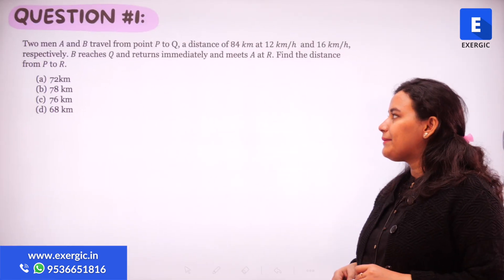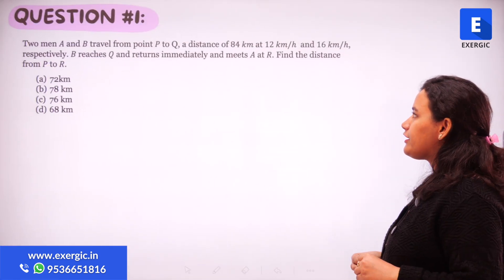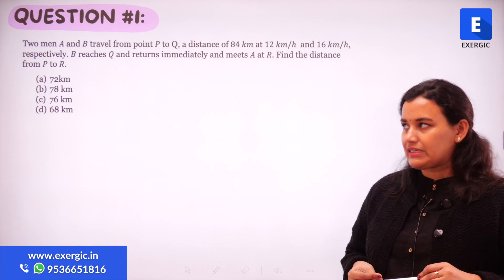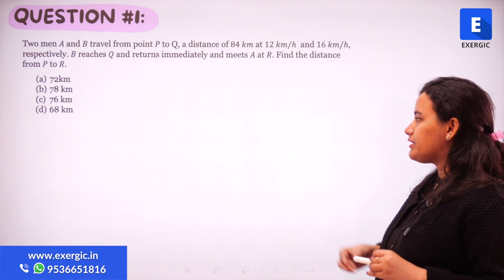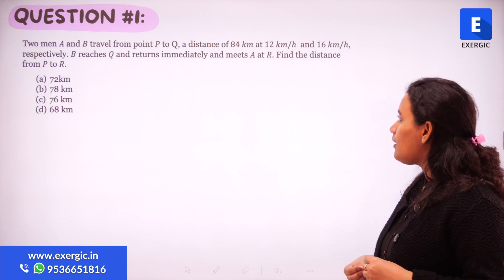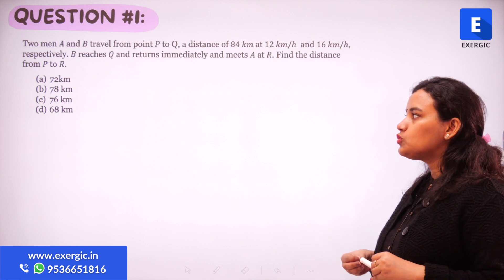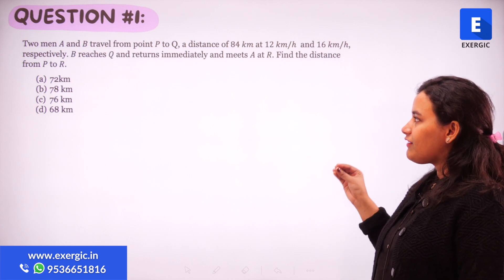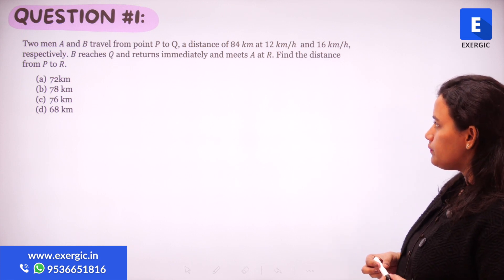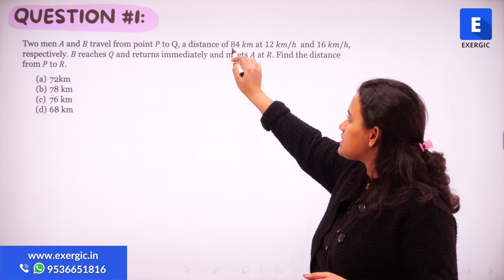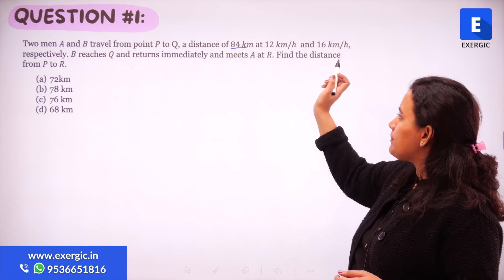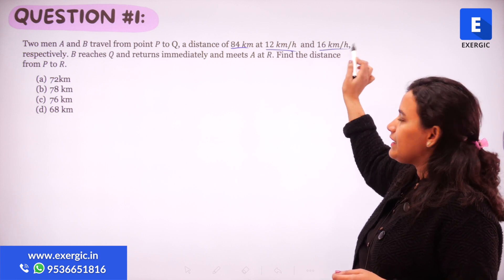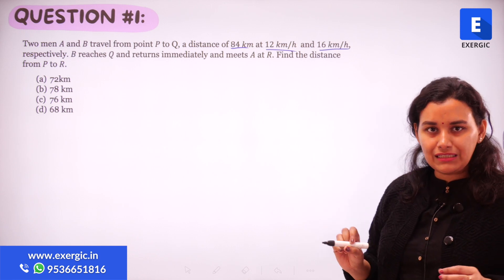Two men A and B travel from point P to Q, a distance of 84 kilometers, at 12 km/h and 16 km/h respectively. B reaches Q and returns immediately and meets A at R. Find the distance from P to R. We have two people traveling from P to Q; A walks at 12 km/h and B travels at 16 km/h.